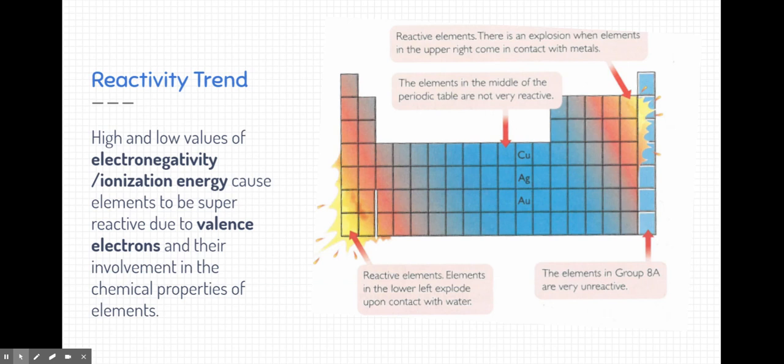the most reactive elements are the alkali metals, the group on the far left, and the halogens, the second to the last group on the far right. The noble gases also relate to this as well.